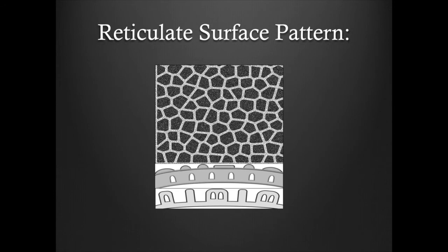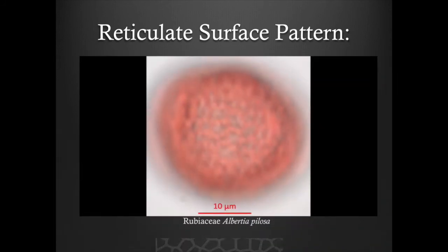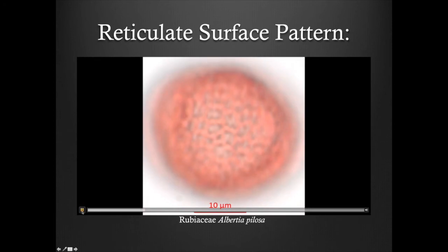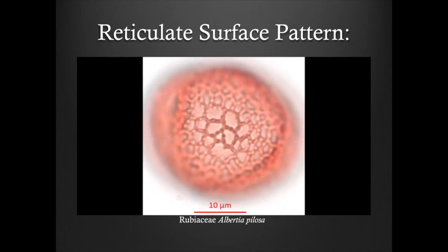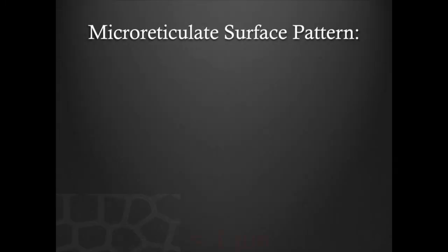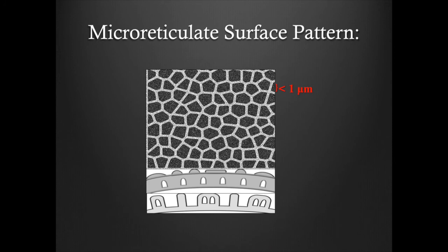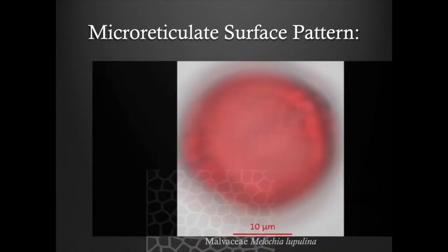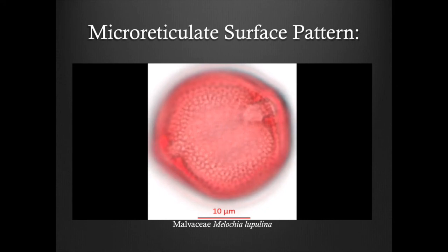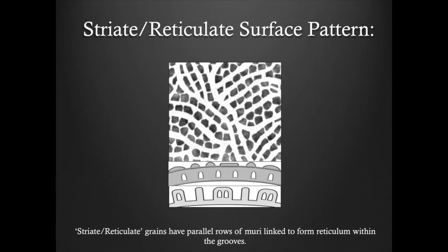Here is an example of a reticulate grain. Here is an example of a micro-reticulate grain. Striate-reticulate grains have parallel rows of muri linked together to form reticulum within the groups.